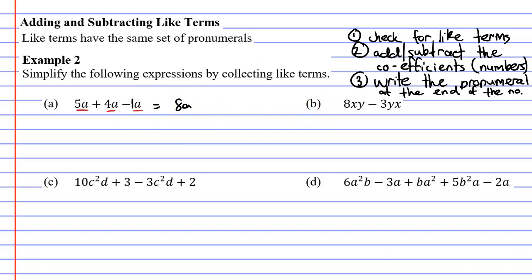Let's now look at question B. We have 8xy and 3yx. They have the same set of pronumerals. It doesn't matter about the order. So these are like terms. That's step 1. Step 2 we're going to add and subtract the coefficients. 8 minus 3 which is 5. Write that here. 5. And step 3 says write the pronumerals or maybe set of pronumerals at the end of the number. So 5xy or we could have had 5yx. Both solutions would be appropriate.